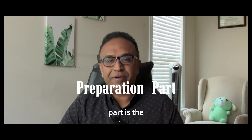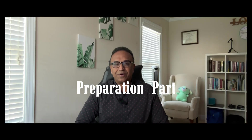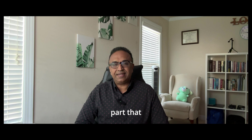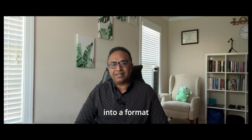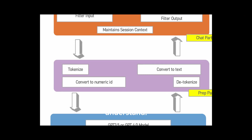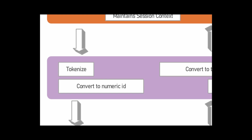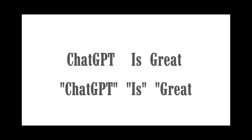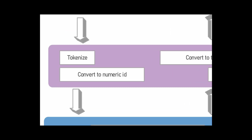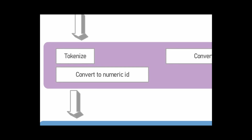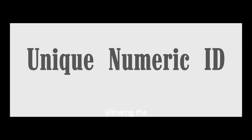The second part is the preparation part, and this part plays a crucial role. It takes the text and transforms it into a format that the model can understand, breaking it down into smaller units called tokens using a process called tokenization. For instance, if your text is 'ChatGPT is great,' the tokens will be 'ChatGPT,' 'is,' 'great.' After this, the next step is to convert the text into numeric IDs, which are then passed into the model. Each token is assigned a unique numeric representation, allowing the model to process and analyze the text effectively.